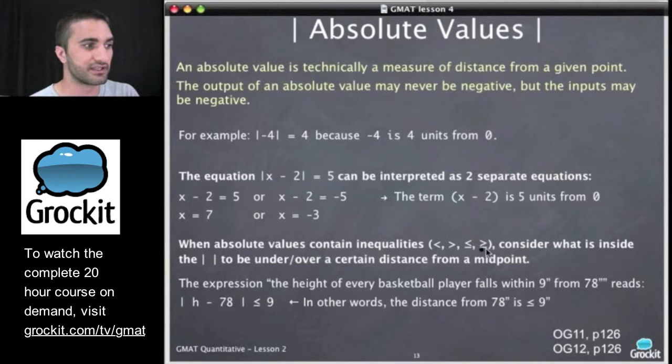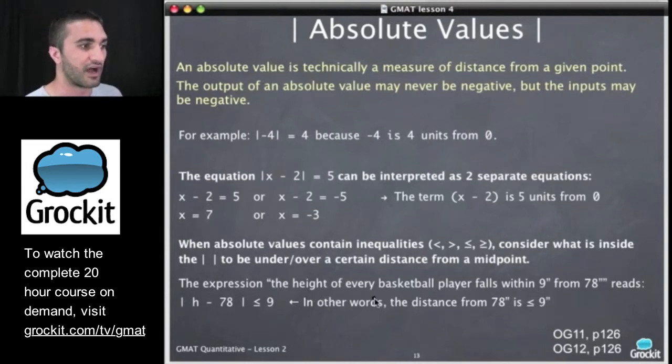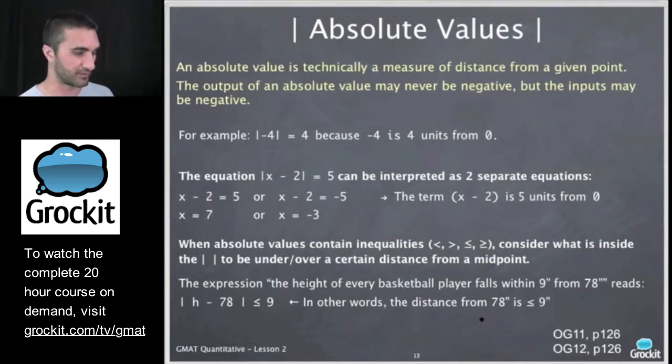When absolute values contain inequalities, consider what is inside the absolute value marks to be under slash over a certain distance from a midpoint. So taking a look at this example, the expression, the height of every basketball player falls within nine inches from 78 inches. This means that the height minus 78 inches is less than nine. In other words, the distance from 78 inches is less than or equal to nine inches in some direction.